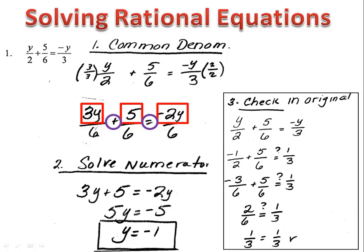In this case, plug negative 1 into y over 2 plus 5 over 6 equals negative y over 3. No matter how you do your check in this case, you find out that it does work and so the solution to the equation is y equals negative 1.